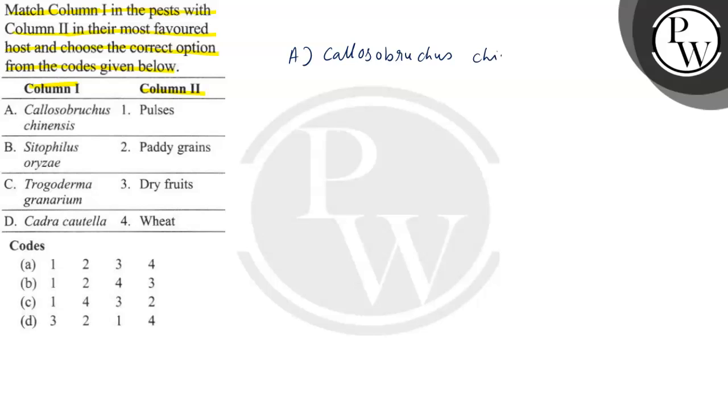What do we need to do? Pulses. What is its favored host? Pulses. So A will be 1.